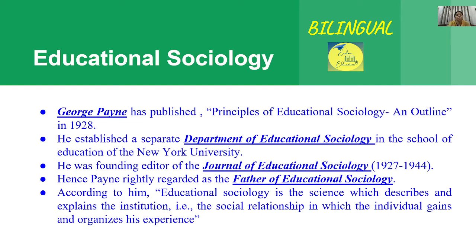George Payne published 'Principles of Educational Sociology: An Outline' in 1928 — nearly a hundred years ago. He wrote a book outlining the fundamental principles of educational sociology. I am re-recording this because in the previous version I mistakenly said 1923 instead of 1928 — the digits 3 and 8 look similar — so I am correcting that error so that incorrect information does not spread.